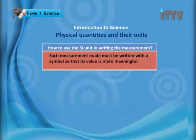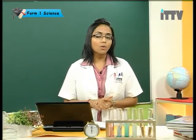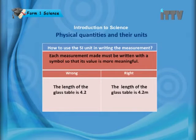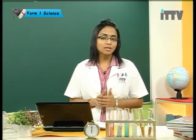Now that you know the SI units, how do you use them in writing measurements? Each measurement must be written with a symbol so its value is meaningful. The wrong way: 'the length of the glass table is 4.2' — 4.2 what? Kilograms? Meters? You must put a symbol. The correct way: 'the length of the glass table is 4.2 meters.'